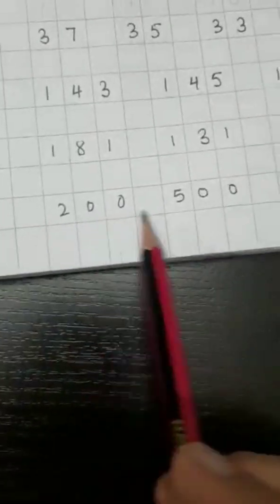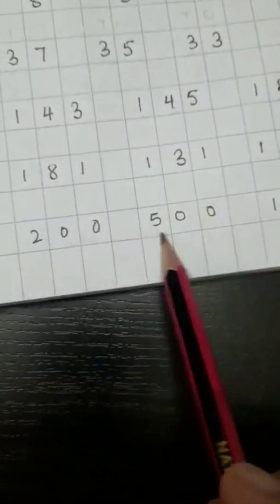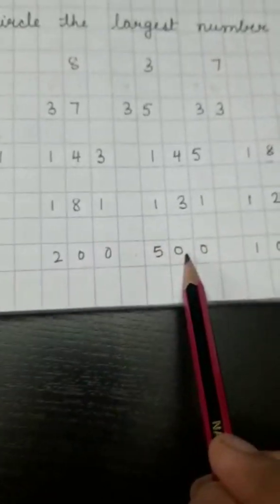Now, 400, 200, 500, 100. Now, see, 1's and 10's are same, right? So, we will see 100's place. 100's place, which is the biggest number? Largest number? 500, okay? You will encircle this number. Right, children?